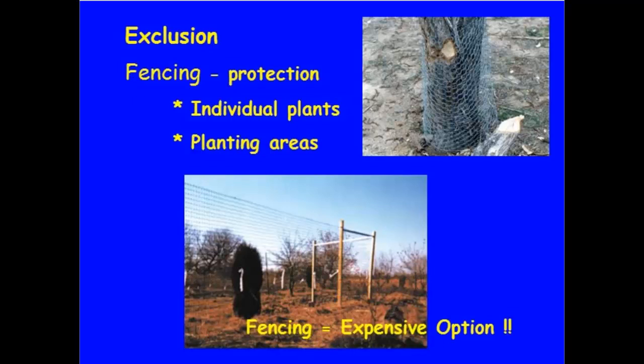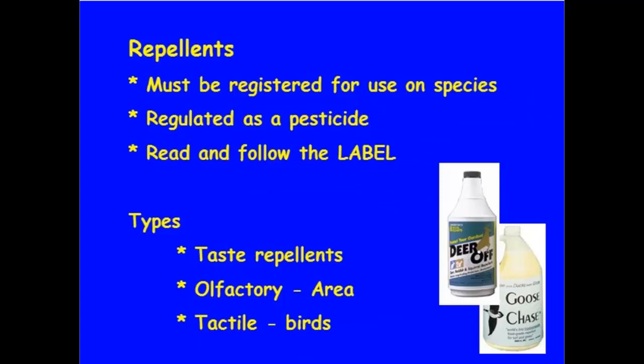Exclusion is another technique that we can apply — fencing individual plants or planting areas in the case of vegetable production. It's not an inexpensive option, but it does have a place in an integrated pest management approach.